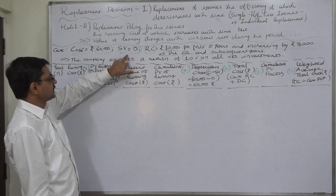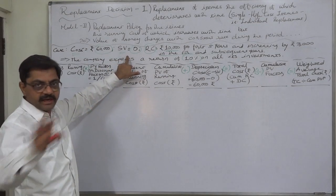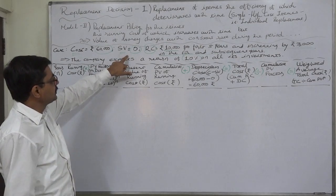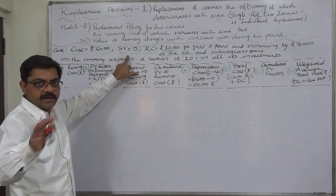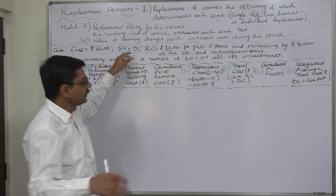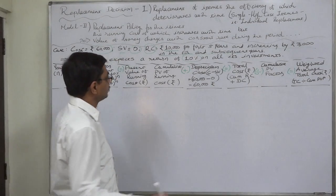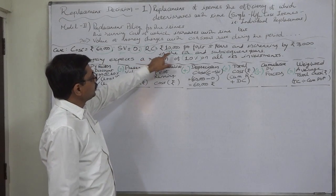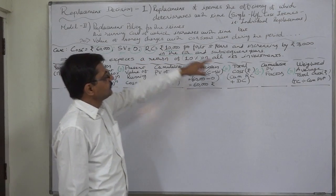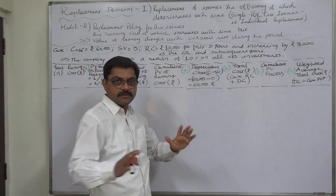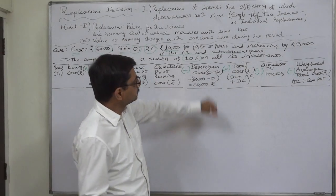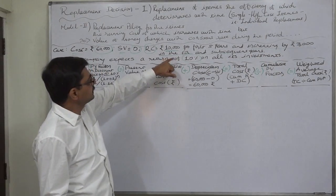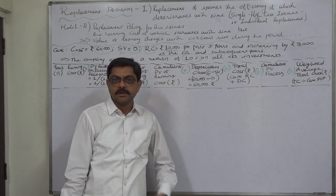Salvage value, or scrap value, or resale value is 0 at any point of time. That means the depreciation cost every time will be 60,000 minus 0 equals 60,000. Running cost is given to be Rs. 10,000 for the first 5 years — every year only 10,000 — but increasing by Rs. 3,000 in the 6th and subsequent years.